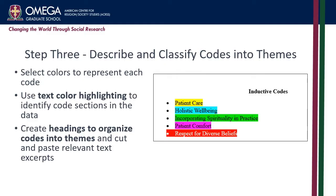In the third step of the data analysis spiral, we move into the coding process. Start by selecting a color for each code you want to identify. For example, you can assign one color representing a specific theme or concept. Using Microsoft Word's text color highlighting feature, apply the designated color to the relevant sections of text that represent each code. This visual representation allows you to see patterns and connections across the data. Next, create headings to organize these codes into themes. You can create a separate section for each theme and cut and paste the relevant text excerpts under their respective themes. Microsoft Word's cut and paste functionality makes it easy to reorganize the data as you refine your themes and sub-themes. Remember, this process is iterative, and you may need to revisit and revise your codes and themes as you gain deeper insights into the data.